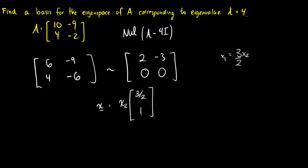The vector x equals x2 times [3/2, 1], which means that the eigenspace of A corresponding to eigenvalue lambda equals 4 is the span of that vector. So the basis B is just the vector [3/2, 1] — this basis contains only one vector. For a 3x3 matrix it would probably contain two vectors, for a 4x4 three vectors, because the eigenspace always has a non-trivial solution, so one column is a non-pivot column.